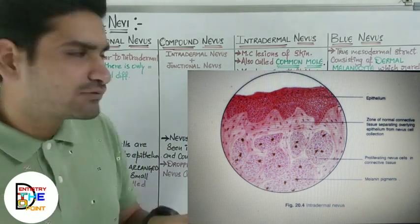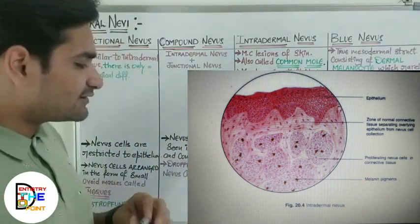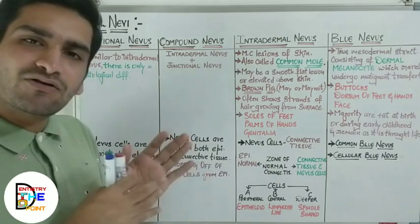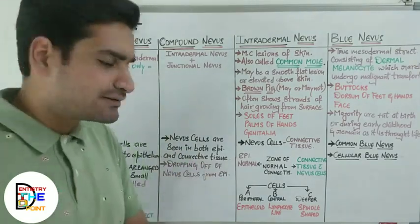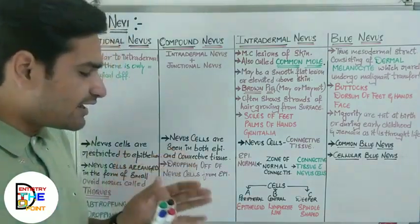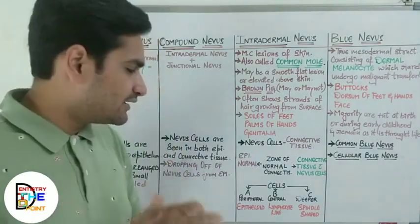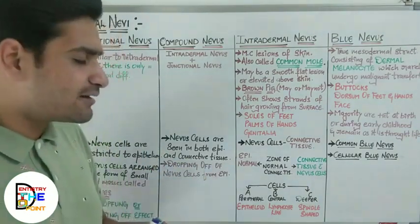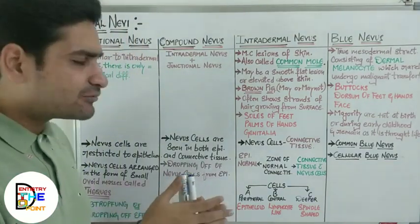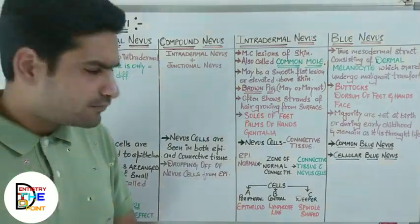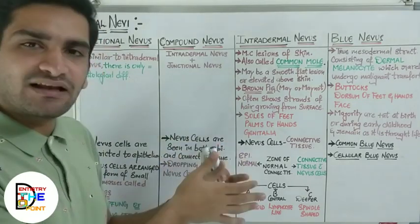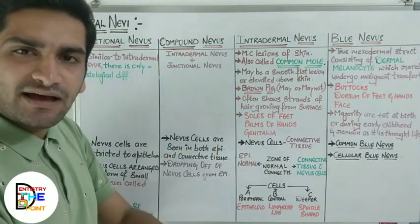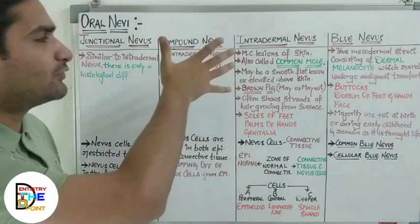There are three types of cells present in the histological section: Type A, Type B, and Type C. Type A cells are called peripheral cells and are epithelial-type cells. Type B cells are central cells and are lymphocyte-like cells. Type C cells are deeper cells and are spindle-shaped cells. Key points to remember: the nevus cells have crossed the epithelium into the connective tissue, and there is a zone of normal connective tissue separating the affected area from the normal epithelium.